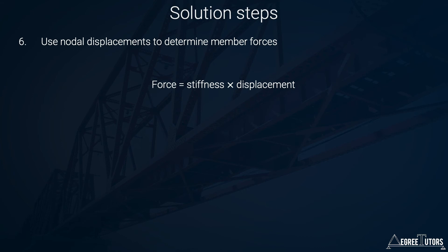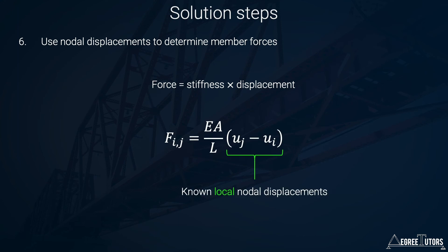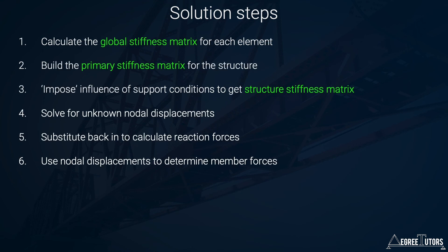The concept underlying step six is the same as the whole method: force equals stiffness times displacement. The force in member ij equals the stiffness EA/L times the local nodal displacements for that member. Since we know the displacement at each end of the member, we essentially know the elongation or shortening, and multiplying by the stiffness gives the member force.